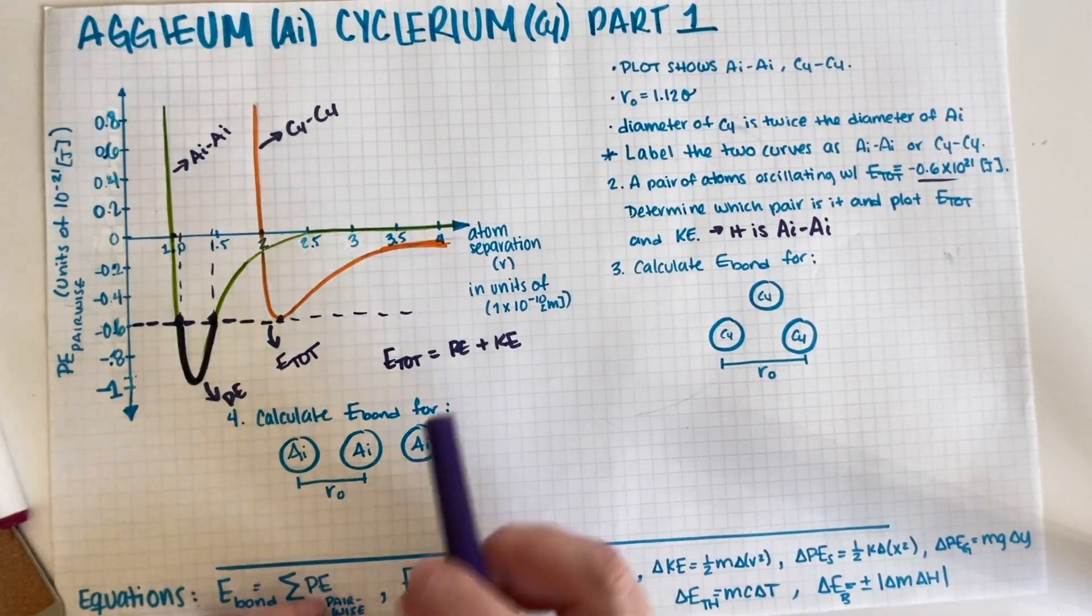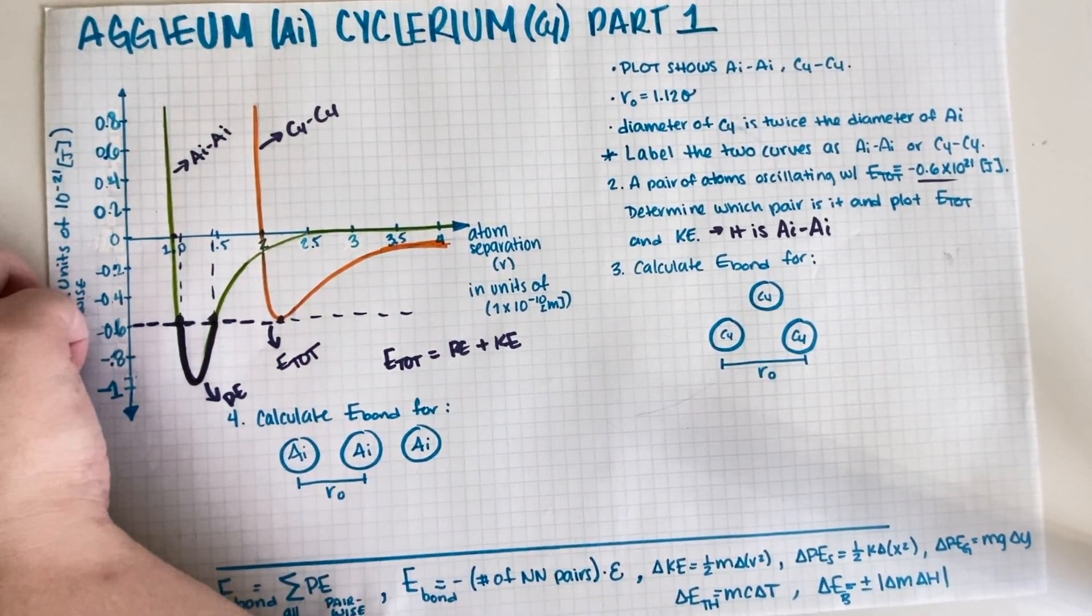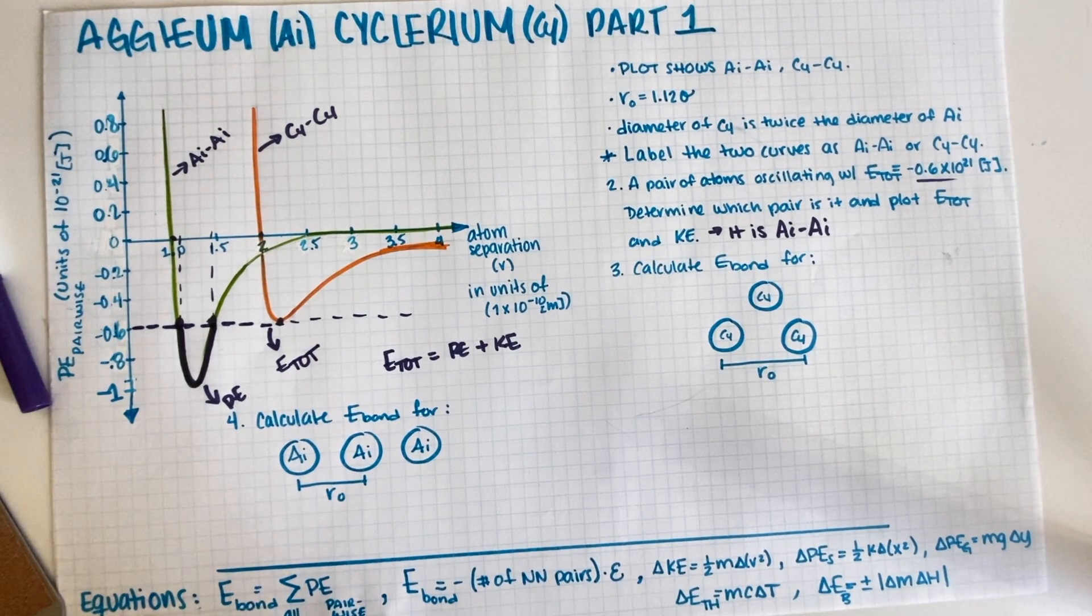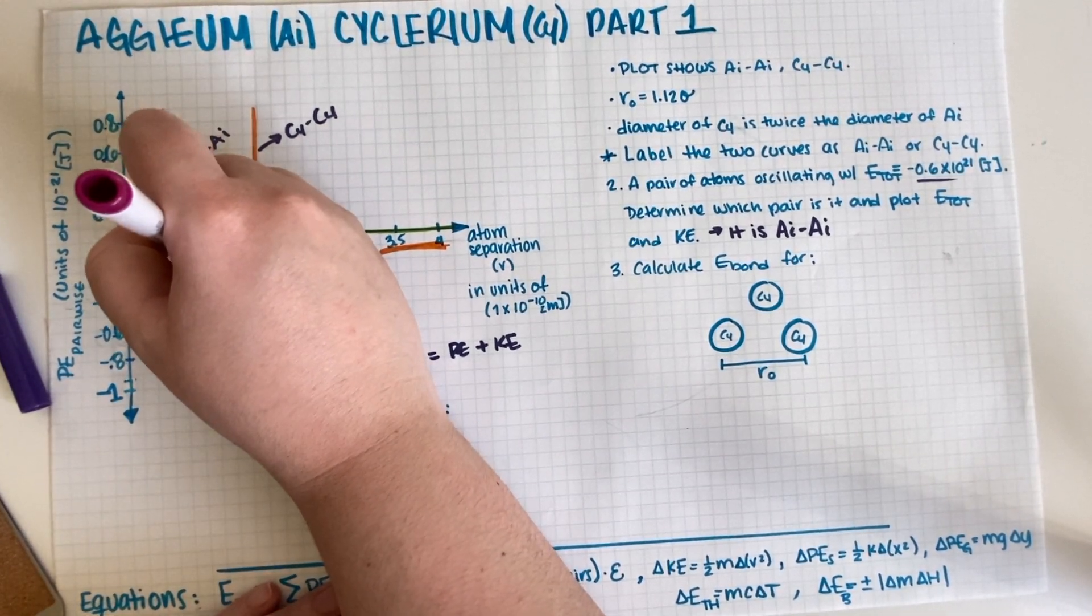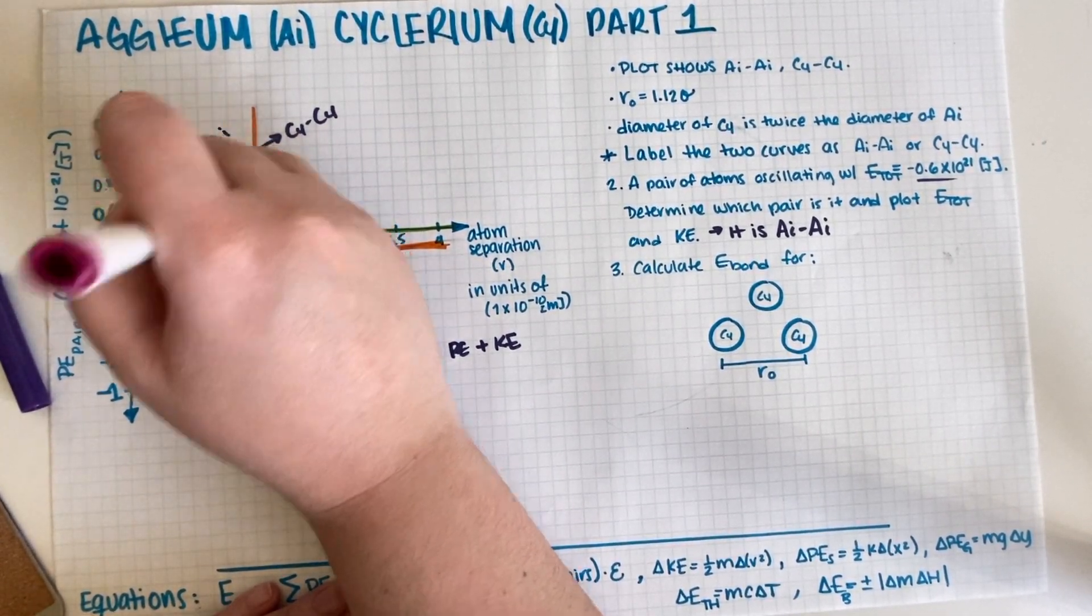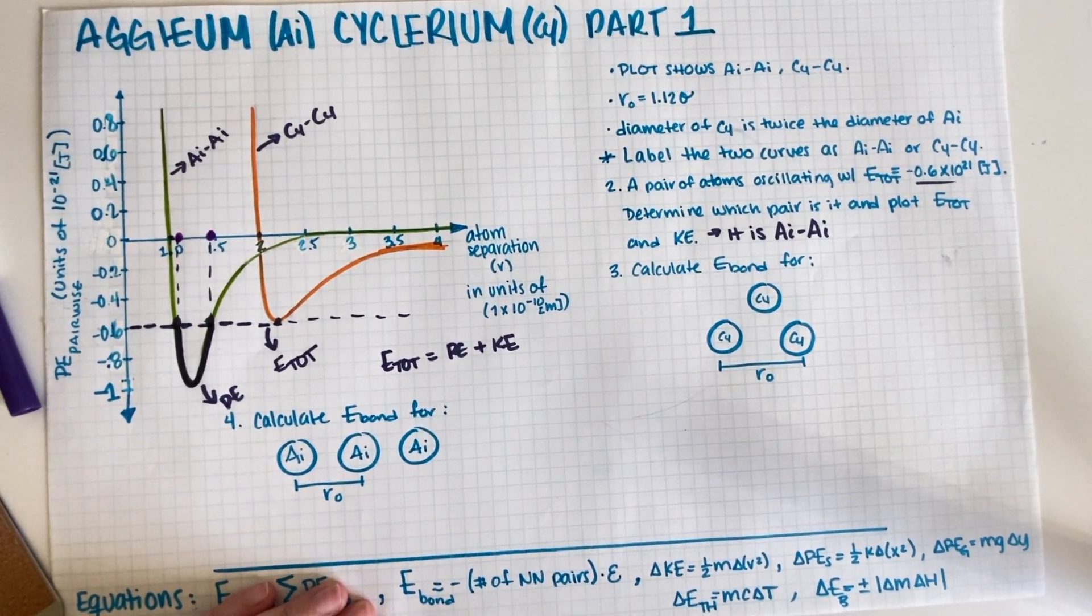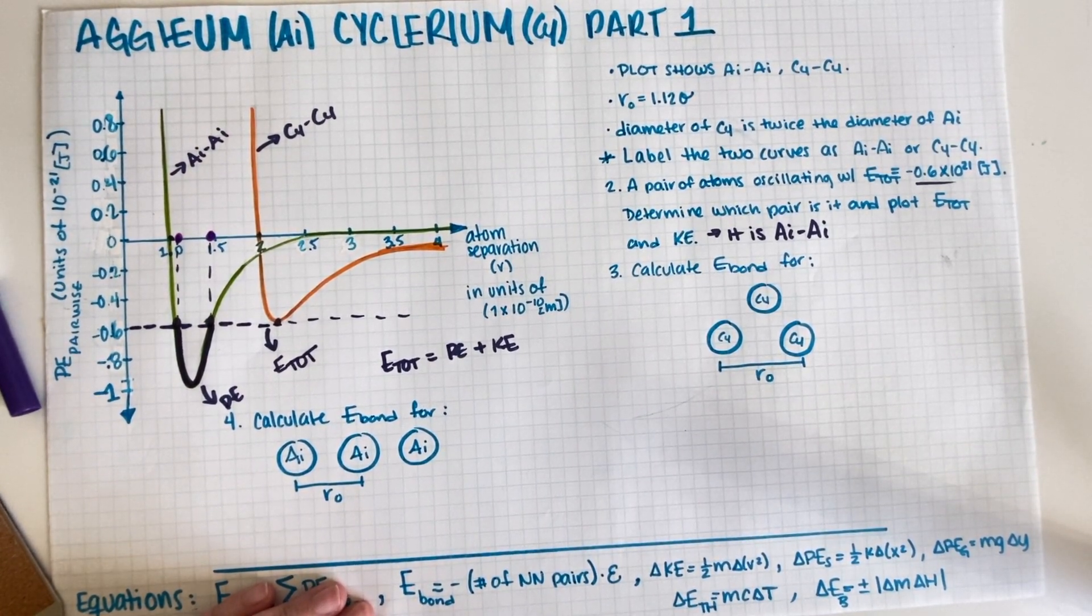So at these two points, potential and total are exactly equal to each other, which means that the kinetic is zero at these two points.